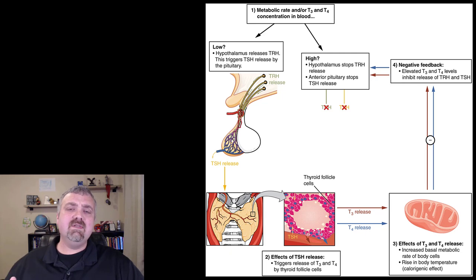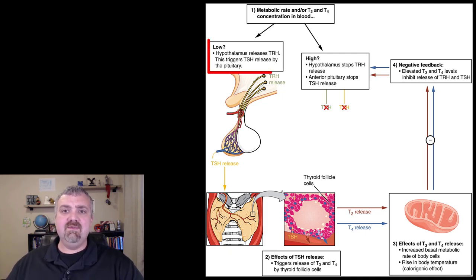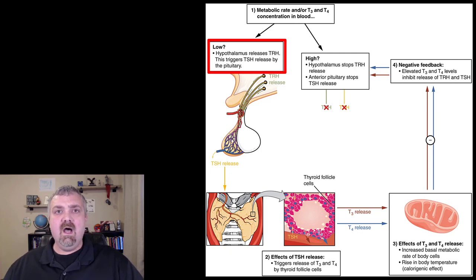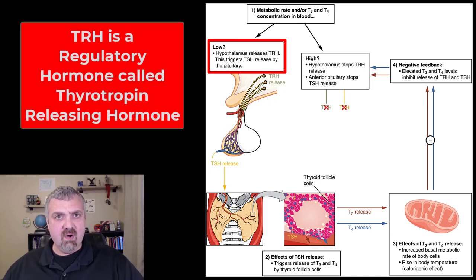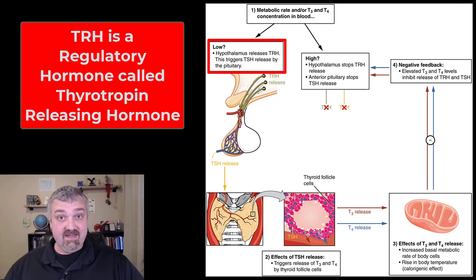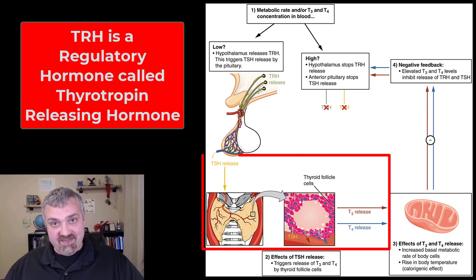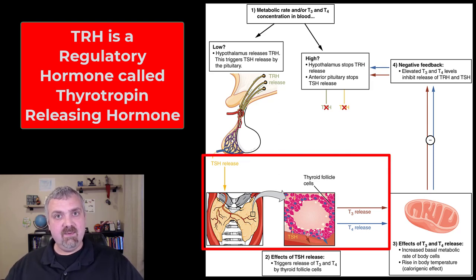We'll walk through this example with thyroid hormones, and then I'll also give another one with your sex hormones. Starting with low thyroid hormone levels: your hypothalamus is going to sense that and release a regulatory hormone called thyrotropin releasing hormone, which tells the pituitary gland to release thyroid stimulating hormone, which tells the thyroid gland to release thyroid hormones T4 and T3. We'll cover them in more detail later.